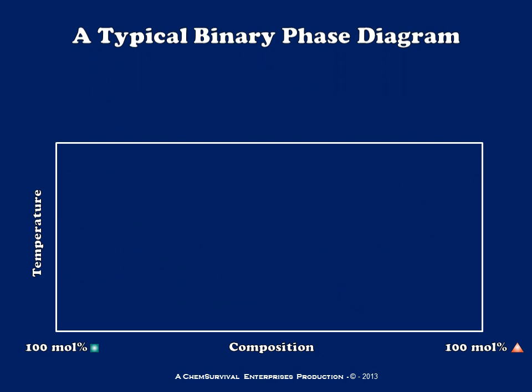Let's take a look at how I created this diagram. Unlike a phase diagram for a pure substance, I have an axis for composition rather than an axis for pressure. On my horizontal axis I'm plotting the mole percentage of one compound in the other — in this case green squares and red triangles.